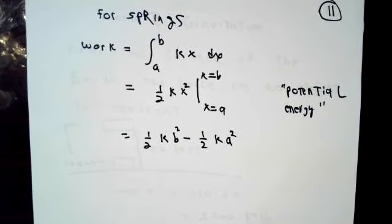Generally speaking, for springs and not anything else, the work, being an integral from a to b of k times x with respect to x has an antiderivative 1 half k times x squared. Those of you who know some physics will recognize that as the potential energy of a harmonic oscillator.